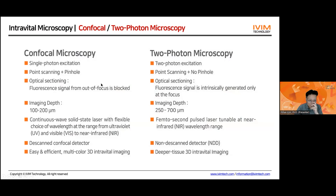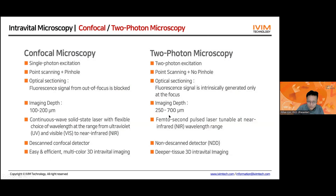Comparing confocal and two-photon microscopy, they are complementary to each other. Confocal microscopy is easy to use and very efficient in fluorescence imaging, and it's very easy to do multicolor imaging. For two-photon microscopy, imaging depth can be extended further — up to 500 to 700 micrometers — so for deeper tissue imaging, two-photon microscopy has an advantage.